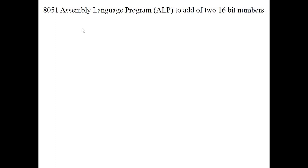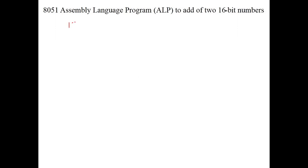I will take an example with two hexadecimal numbers. The first number is 1234 and the second number is F567. Performing manual addition: 7 plus 4 is 11, which in hexadecimal is B. Then 6 plus 3 is 9, 5 plus 2 is 7, and F plus 1 is 10. So the result is 10079B.